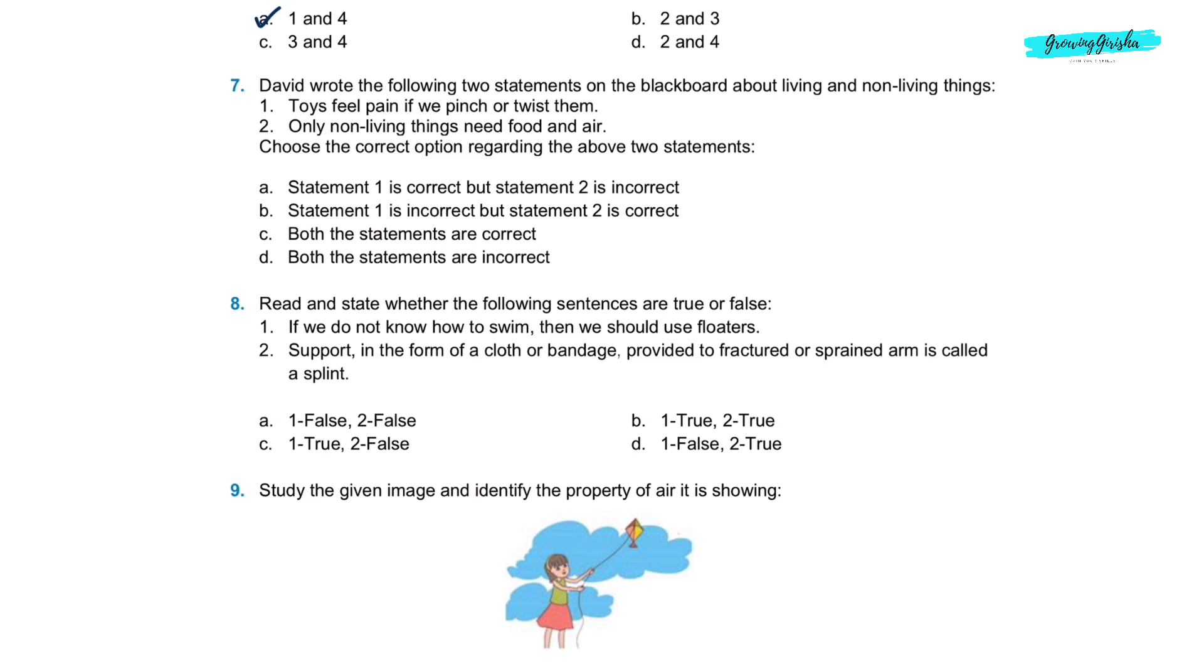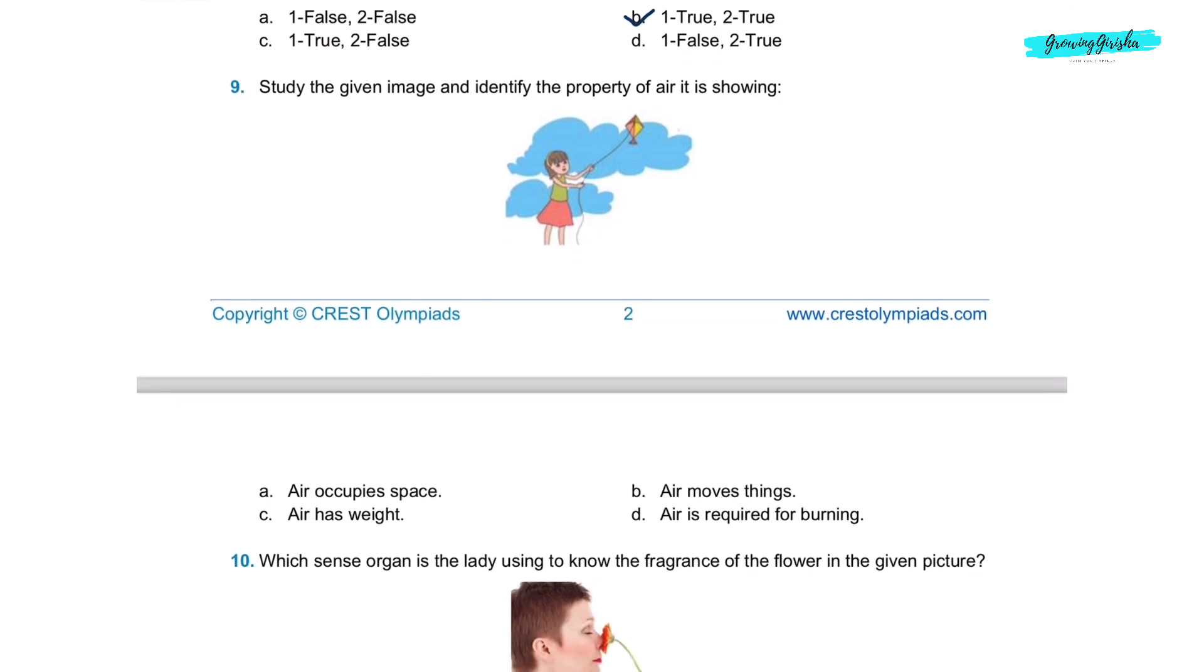Question 7. David wrote the following two statements on the blackboard about living and non-living things. One, toys feel pain if we pinch or twist them. Two, only non-living things need food and air. This is also incorrect. So option D is the correct answer. Question 8. Read and state whether the following sentences are true or false. One, if we do not know how to swim, we should use floaters. This is correct. Two, support in the form of a cloth or bandage provided to fractured or sprained arm is called a splint. Option B, one true, two true.